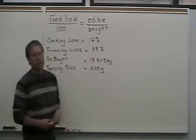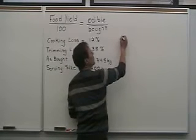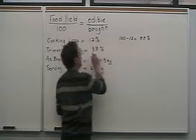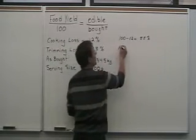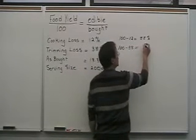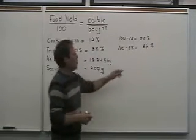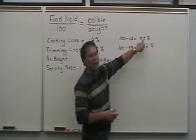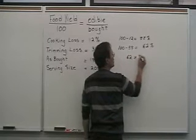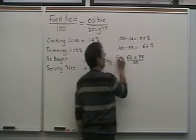To calculate the yield in a case like this, we subtract each of these losses from 100. 100 minus 12 is 88%, and 100 minus 38 is 62%. What we want to find is: what is 62% of 88%? If we take 62 times 88 divided by 100, we get the food yield.